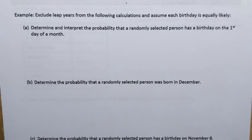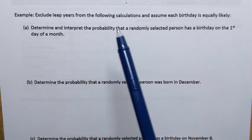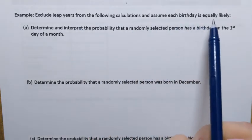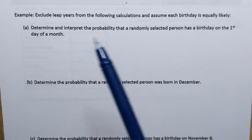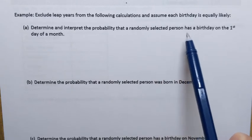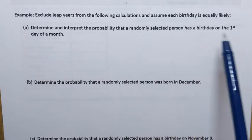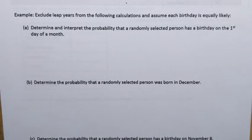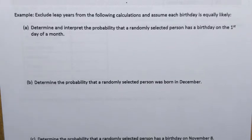We're going to do the following example. Exclude leap years from the following calculations and assume each birthday is equally likely. The first question is to determine and interpret the probability that the randomly selected person has a birthday on the first day of a month. Since all days of the year are equally likely to be that person's birth date, we're going to use the classical method of computing probability, also called the equally likely probability formula.